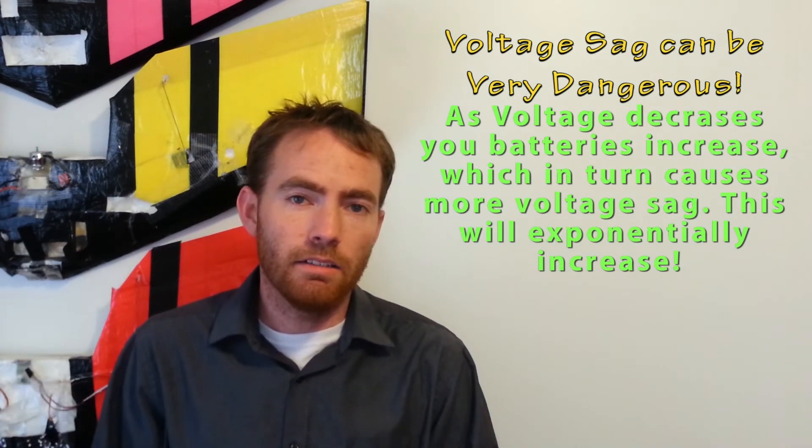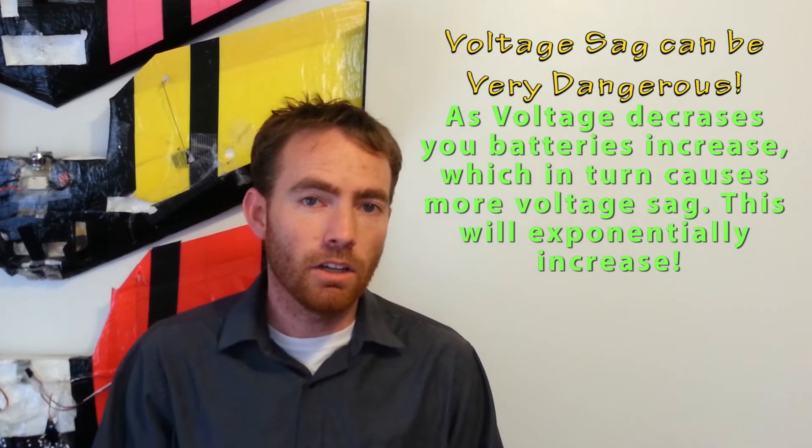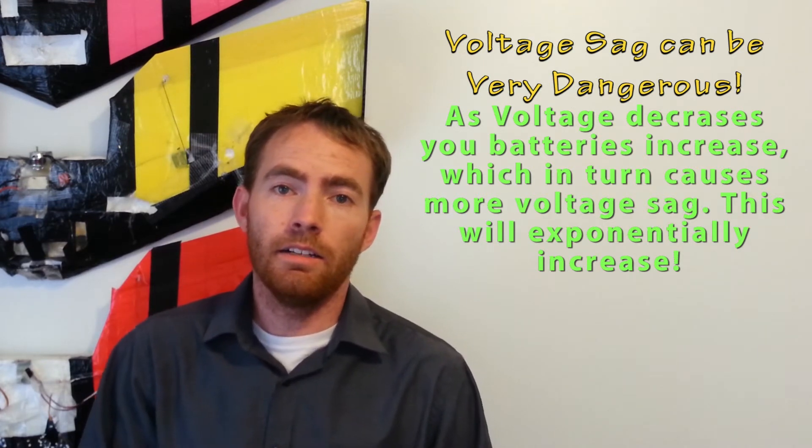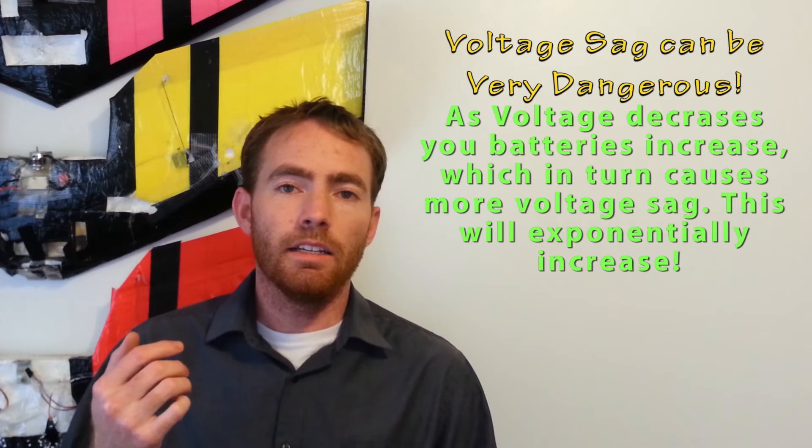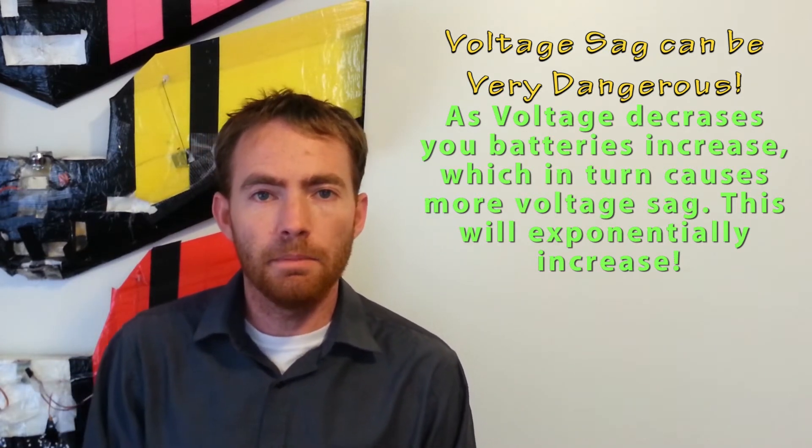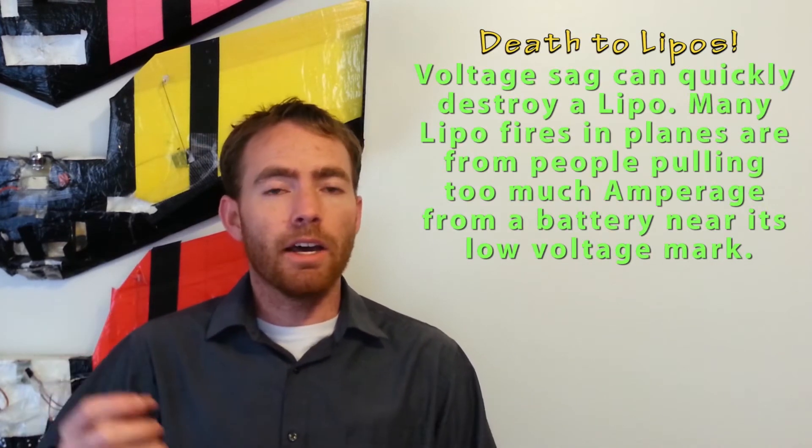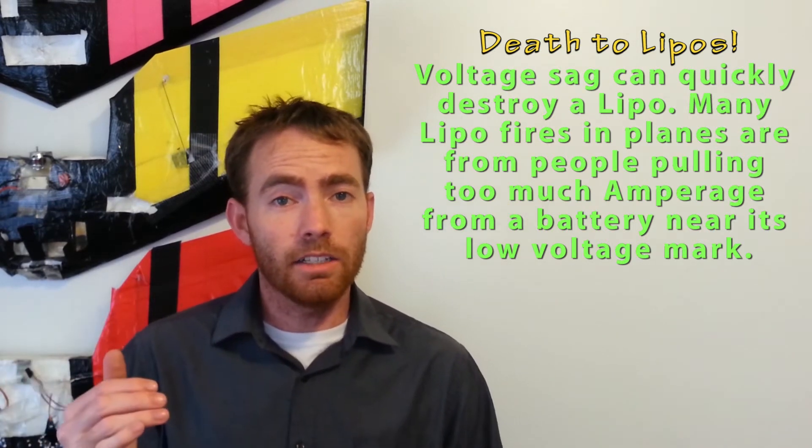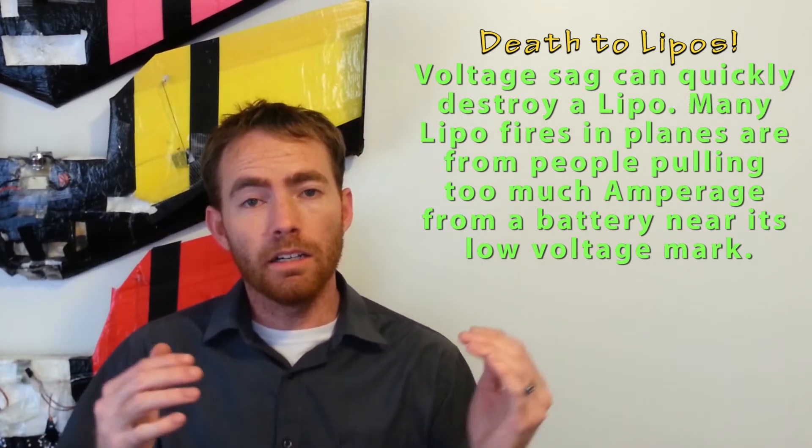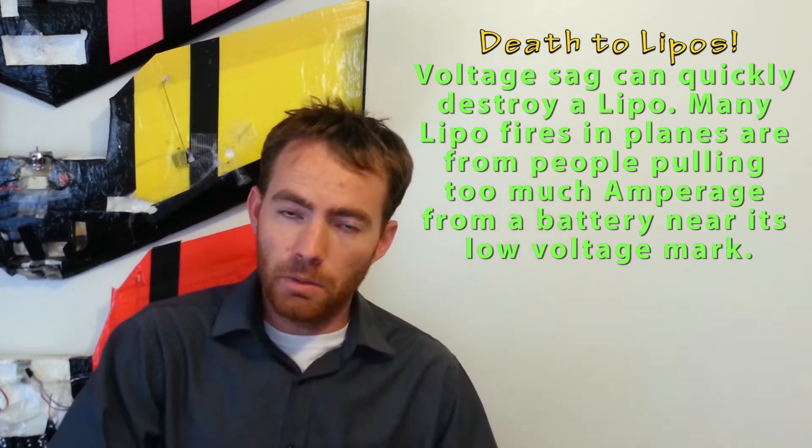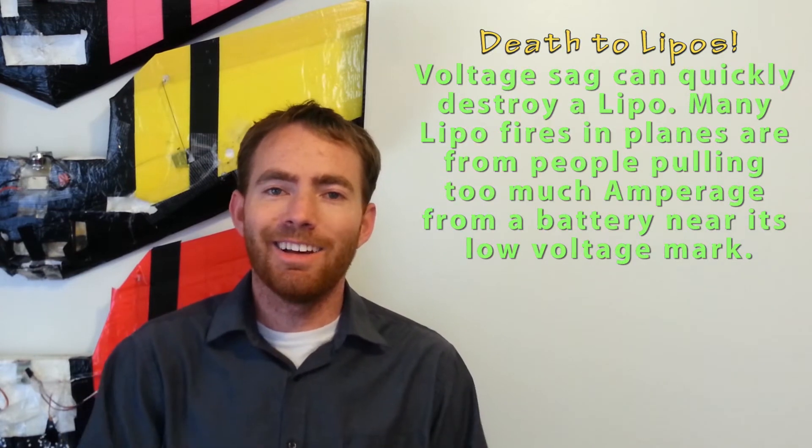The only time you really notice that drastically is if you get into low C rated batteries, which I'll cover C rating in a second quick tip of the week, just so we can knock them out all at the same time. What will happen is if your battery can't put out enough power, it'll start sagging. When the voltage starts sagging, your amperage goes up because you're trying to create the same amount of wattage. And I'll explain wattage as well, just hang on on those.